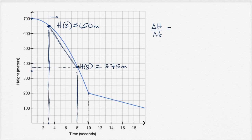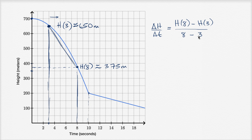Her height at eight seconds minus her height at three seconds — this is her change in height. The change in time is eight seconds minus three seconds, the interval we care about. So h of eight we already said is approximately 375, h of three is 650, and eight minus three is equal to five.